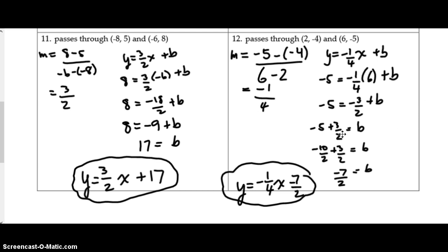Coming over to number 12, I also want you to just check out this multiplication step. So negative 1 times 6 is negative 6 over 4, but I just simply reduce that fraction right off the bat. That's going to make it a little easier when I move it over to not work with bigger numbers. So I added my 3 halves, common denominator to simplify it up. And there's your answer, y equals negative 1 over 4x minus 7 halves.